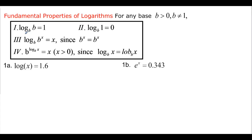The first property says log base b of b equals 1. That means the exponent on b that gets you b is 1, since b to the first equals b. And the exponent on b that gives you 1 is b to the 0.